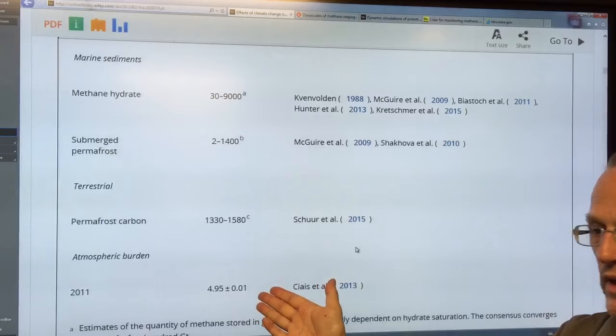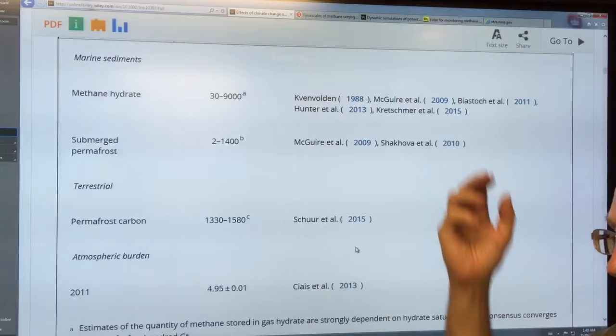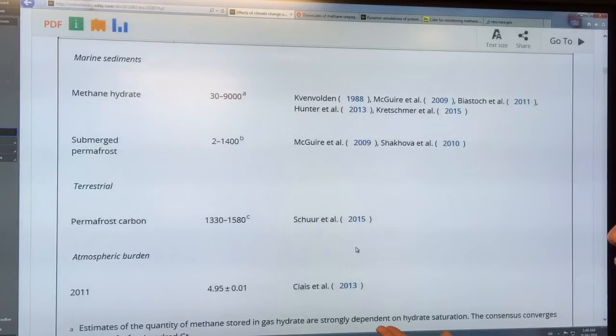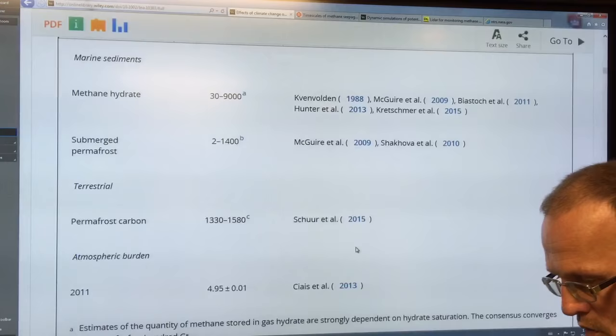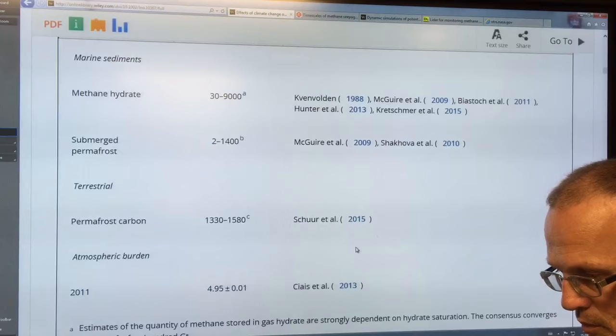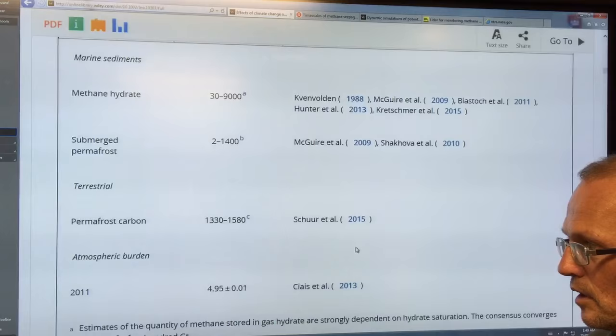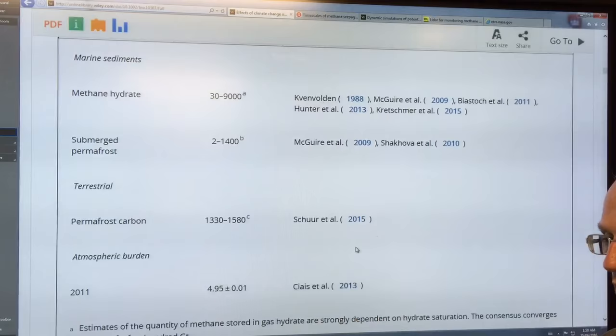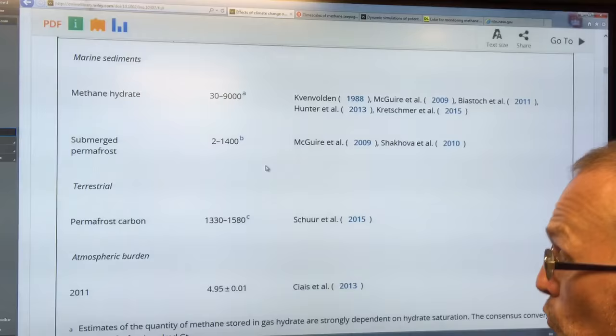So if only 10 gigatons was released from all these sources, that would double the methane in the atmosphere. And that would cause tremendous warming very, very quickly. A few years ago, Peter Wadhams wrote a paper with an economist, and they calculated a 70 trillion dollar hit to the global economies of 50 gigatons of methane came up over the space of a year or two or over 10 years. And 50 gigatons, that's 10 times what there is in the atmosphere. And that's only a very small fraction of what is in the reservoirs up in the Arctic.